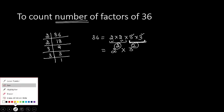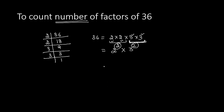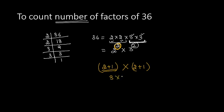That is the trick — what you have to do is add 1 to each exponent. The exponent of 2 is 2, so we add 1 to get 3. Similarly, add 1 to the other exponent of 2 to get 3. So what we have is 3 times 3, which is equal to 9. So 36 will be having 9 factors.